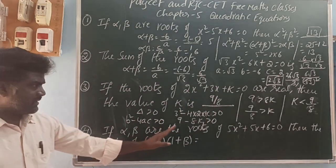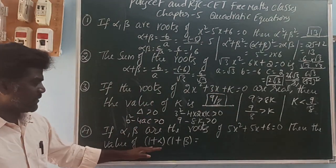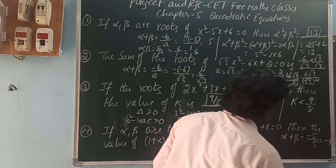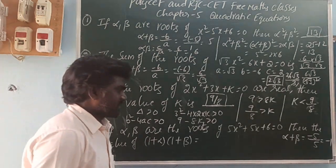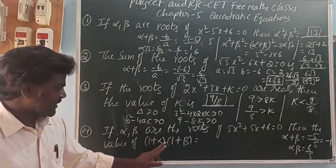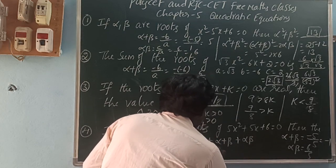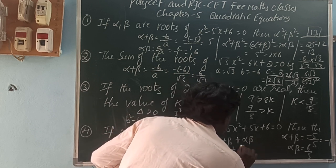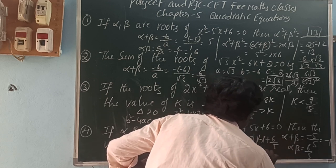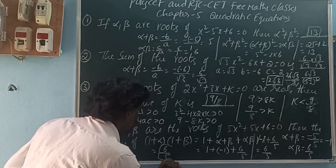Next, if alpha, beta are roots of 5x² + 5x + 6 = 0, then find the value of (1 + alpha)(1 + beta). First, alpha + beta = -5/5 = -1. And alpha × beta = 6/5. So (1 + alpha)(1 + beta) = 1 + alpha + beta + alpha·beta. That is 1 + (-1) + 6/5. Minus 1 plus 1 cancels, giving 6/5. So (1 + alpha)(1 + beta) = 6/5.